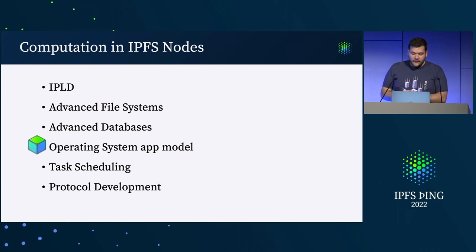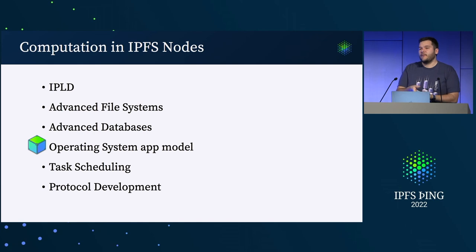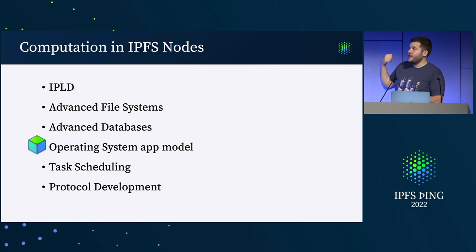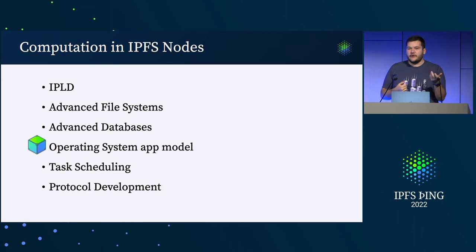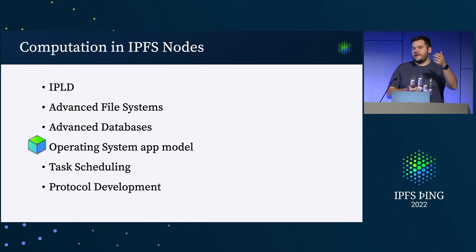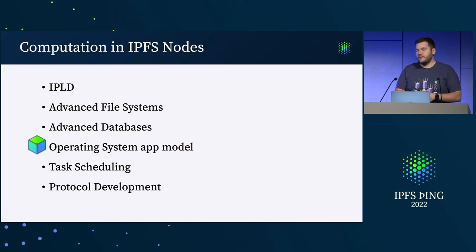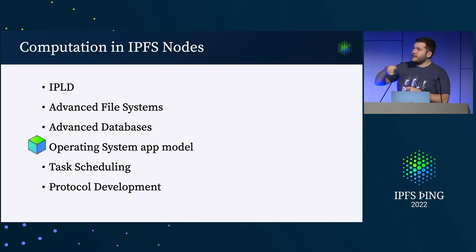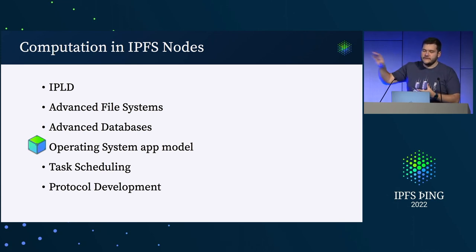We can think of having an application model where IPFS could evolve to have a runtime where you can deploy applications to an IPFS node, similar to how you can install an application in an operating system, install a service worker in a browser, or just visit a web page and run some code. IPFS nodes can evolve to include that application model so you can install portions of an application to run some code in that particular node, interacting with many other nodes in some network.